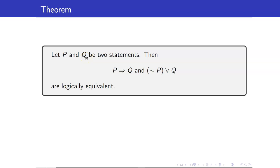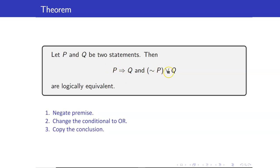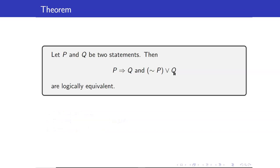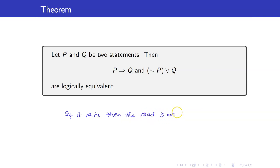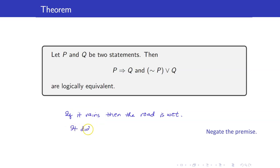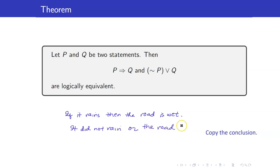We will use the fact that not P or Q is equivalent to P implies Q — this is a theorem. P implies Q is logically equivalent to: negate the premise, turn the conditional into an or, then the statement Q. For example, 'if it rains, then the road is wet' is logically equivalent to 'it did not rain, or the road is wet.' These two statements are just the same.